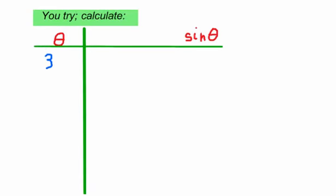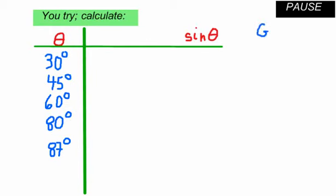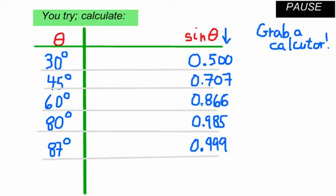Let me show you that again — you try. Calculate the sine of 30, scribble it on paper. The sine of 45. The sine of 60. The sine of 80. And the sine of 87. Here are your results: sine of 30 is 0.5, sine of 45 is 0.707, sine of 60 is about 0.866 — you get these memorized after a while. Sine of 80 is 0.985. And sine of 87, according to the calculator, is 0.999 — 999 one-thousandths — pretty close to 1.